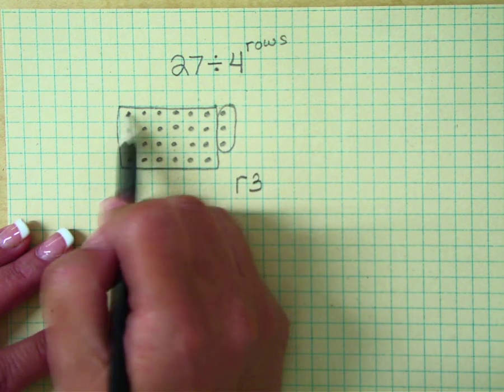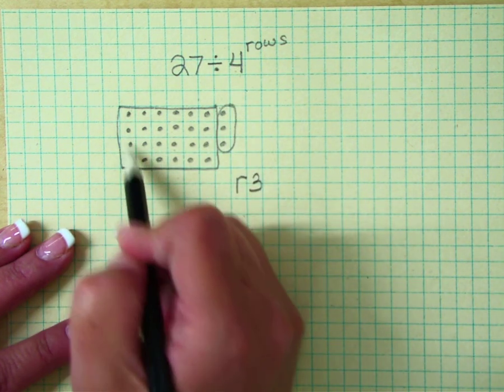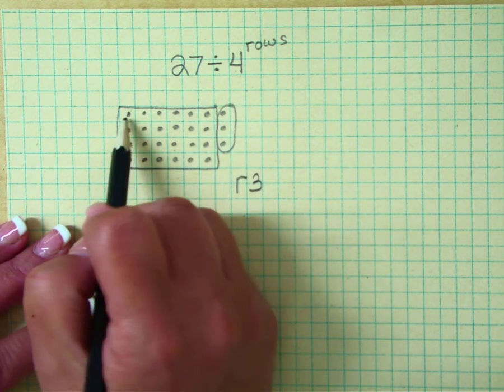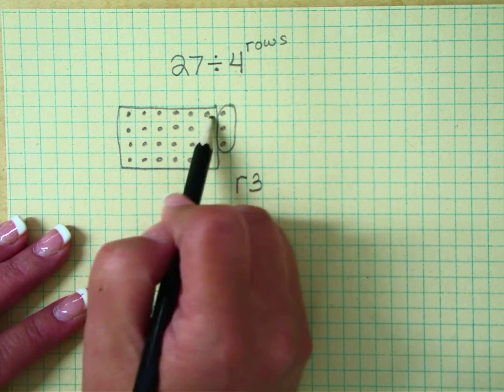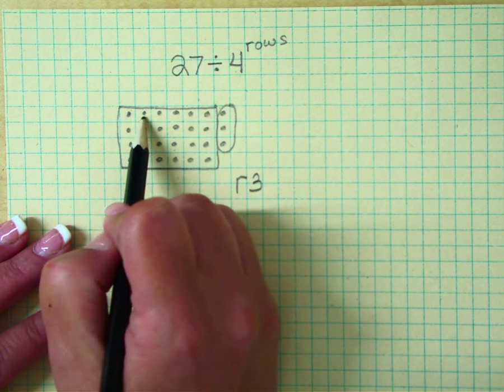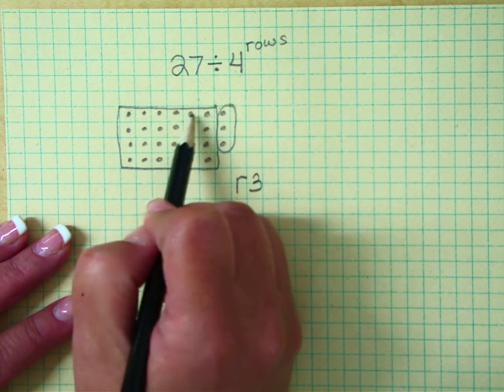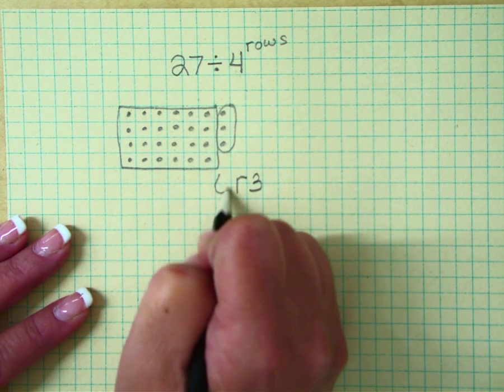Then, since we have four rows, one, two, three, four rows, we ask ourselves how many were in each row? One, two, three, four, five, six.